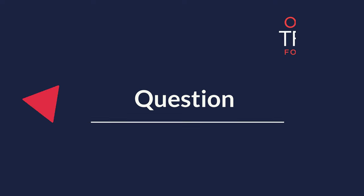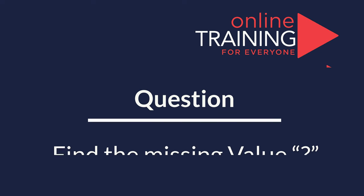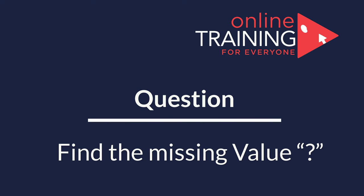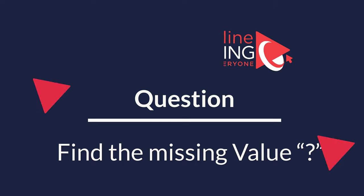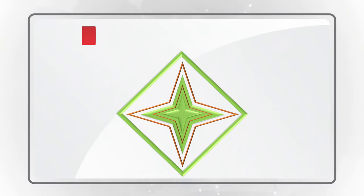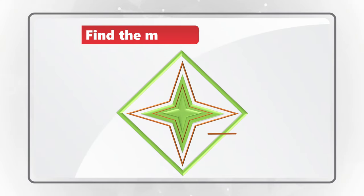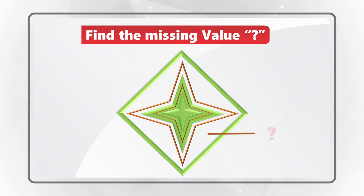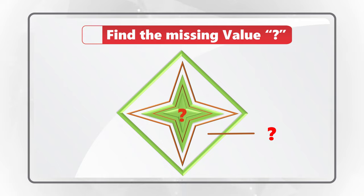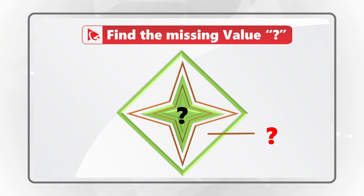Here's an amazing question where you need to find the missing values. Missing values are represented by the question mark and are located on the outside and inside the star. The star is hosted inside the diamond, and this combined figure has numbers around it.